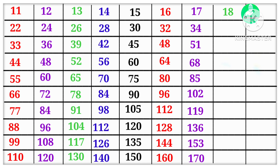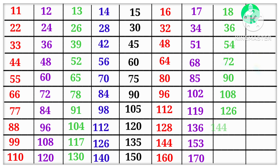18 1s are 18, 18 2s are 36, 18 3s are 54, 18 4s are 72, 18 5s are 90, 18 6s are 108, 18 7s are 126, 18 8s are 144, 18 9s are 162.